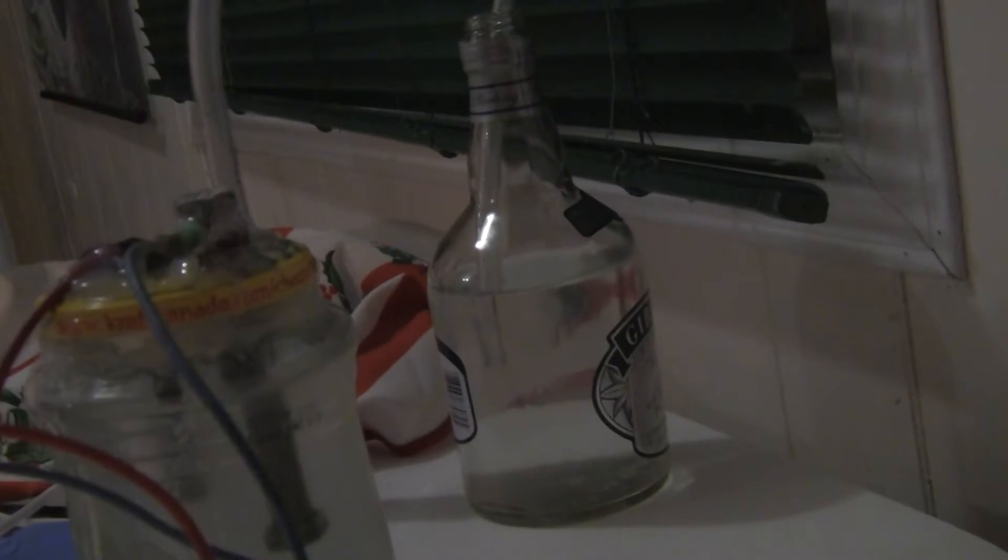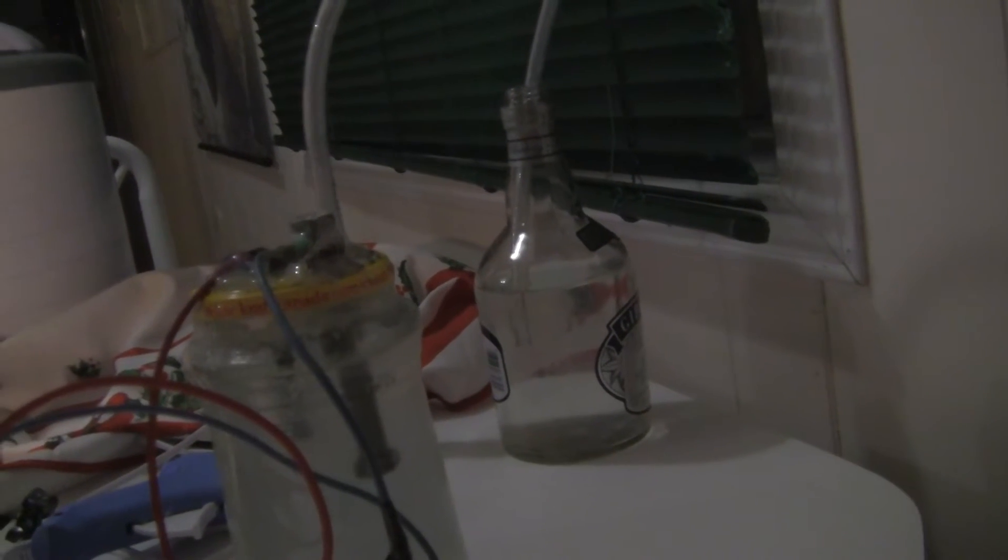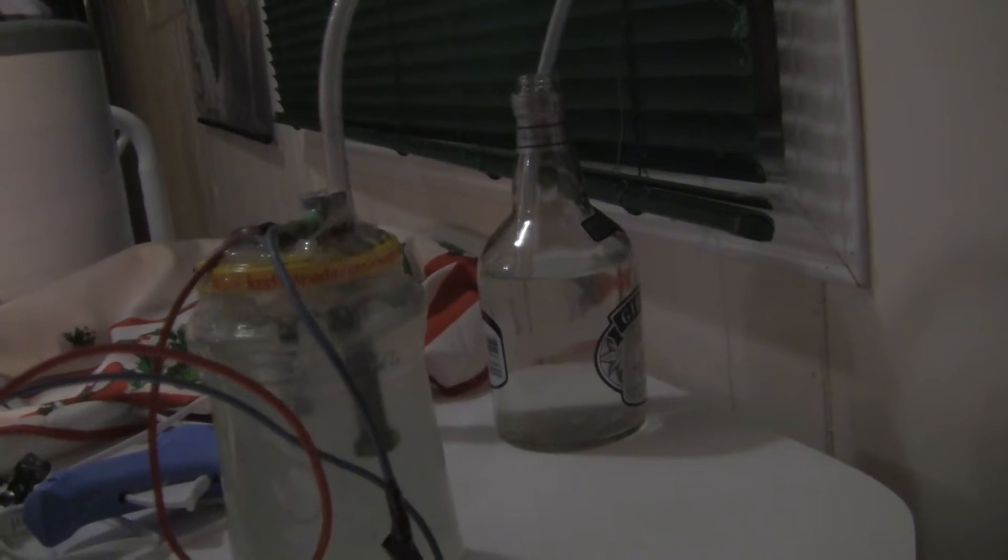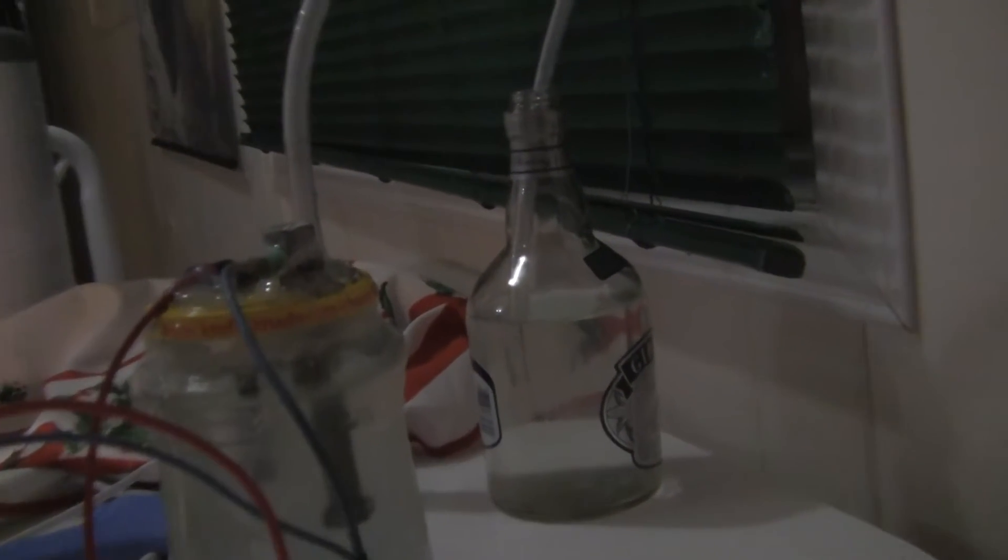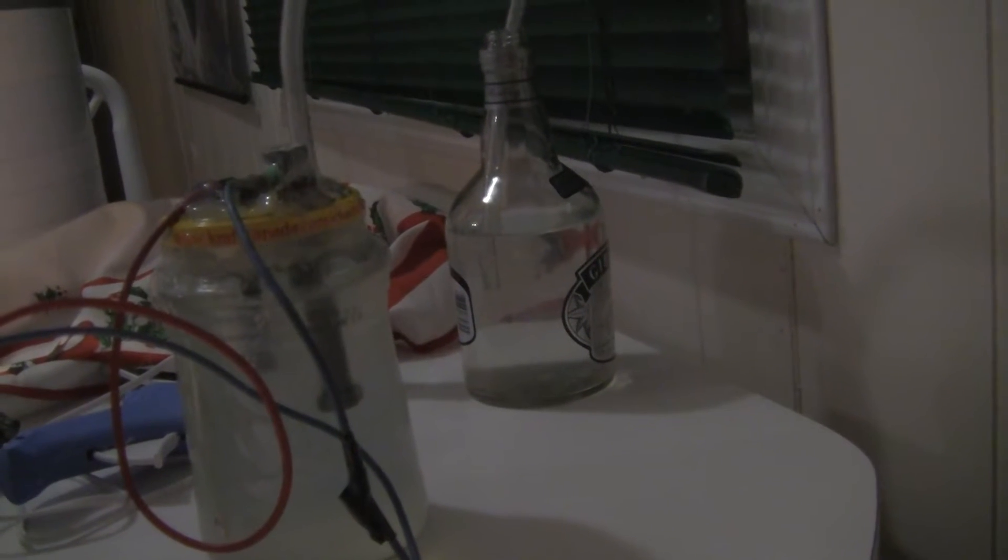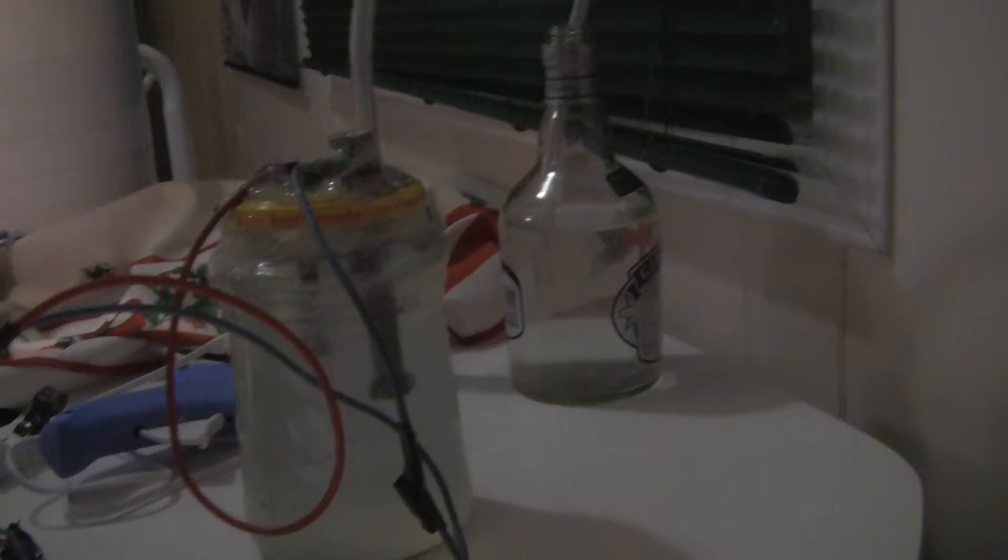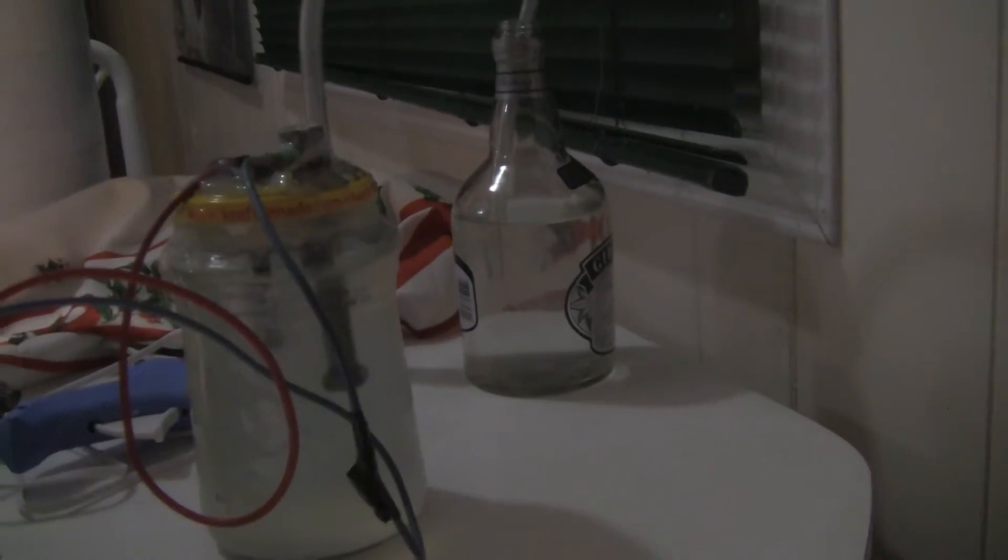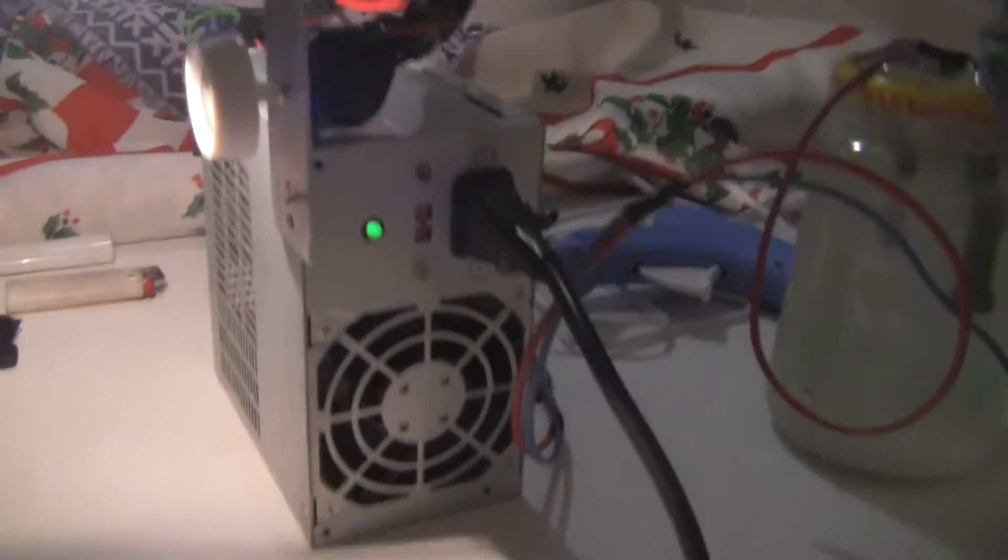And that's lye or sodium, whatever, caustic soda mixture which will scrub the chlorine out. Basically, the mix is suitable for running indoors. Just watch out for the caustic soda mixture because you don't want to be touching that.